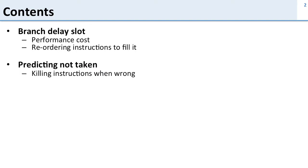We're then going to look at a simple way of predicting what a branch does - we're going to predict it's not taken. When we're wrong, we have to clean up from having the wrong instructions executing. So we're going to talk about how to kill instructions when we're wrong.